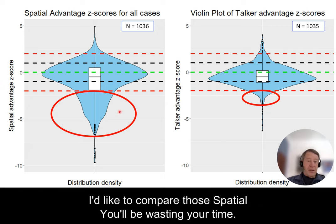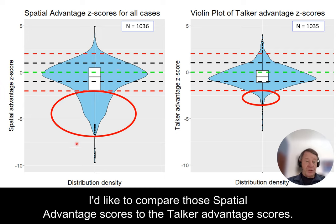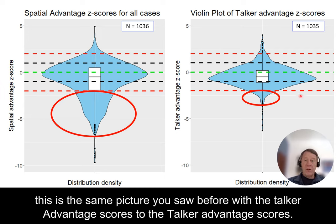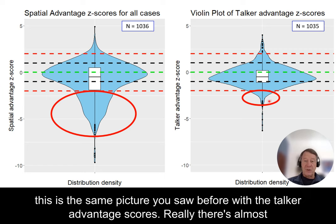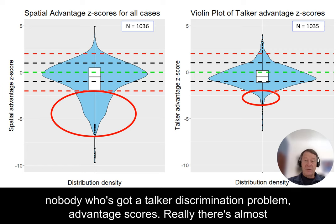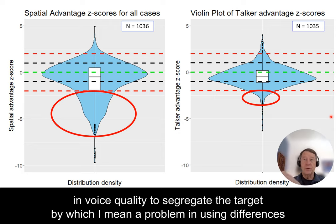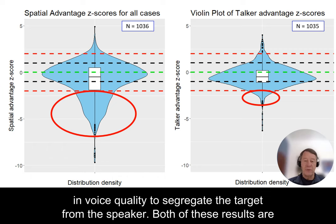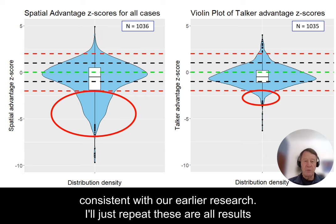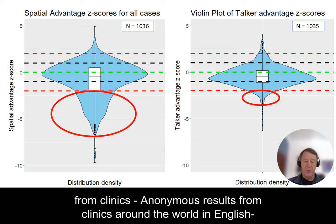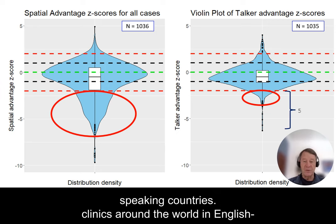Comparing the spatial advantage scores with the talker advantage scores, there's almost nobody who has a talker problem — difficulty using differences in voice quality to segregate the target from the speaker. Both of these findings are consistent with our earlier research. I'll repeat: these are all anonymous results from clinics around the world in English-speaking countries.